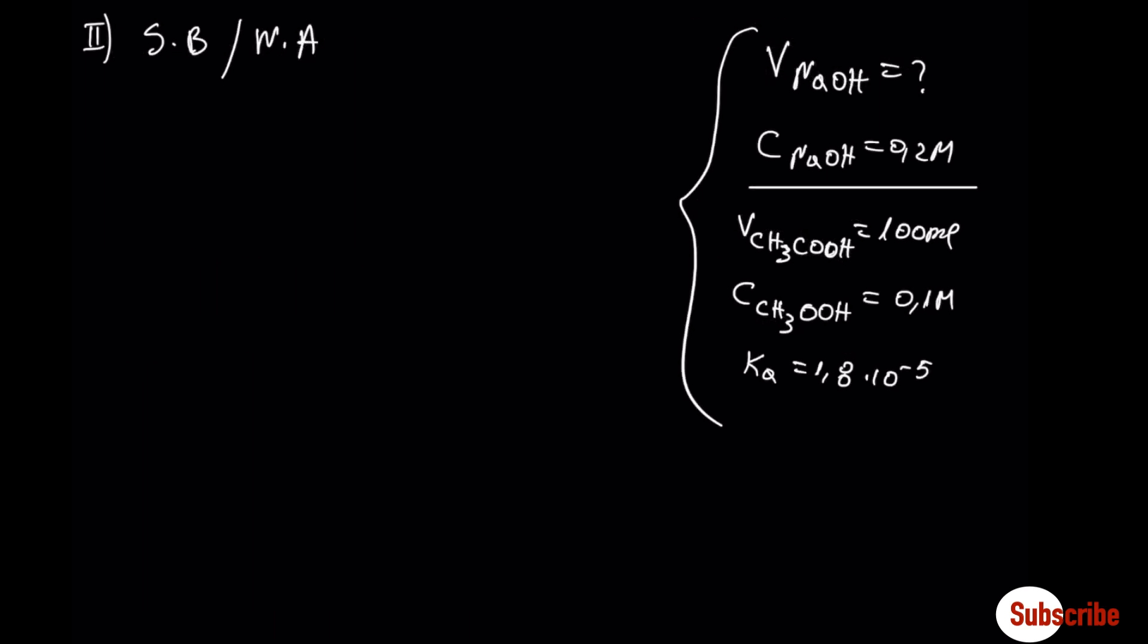Let's move now to the second example. Now, we are going to have titration of a weak acid with a strong base. Find the volume of sodium hydroxide, which is a strong base, in a concentration 0.2 molar, required to neutralize 100 mL of acetic acid 0.1 molar, which has a dissociation constant 1.8 times 10 to minus 5.